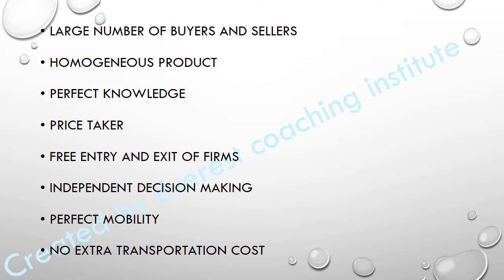The second feature is homogeneous product. Homogeneous means identical. This is a very important feature of perfect competition — all products and goods that are sold or purchased will be of the same type. The goods available across all sellers will be identical units; there won't be different types of units.